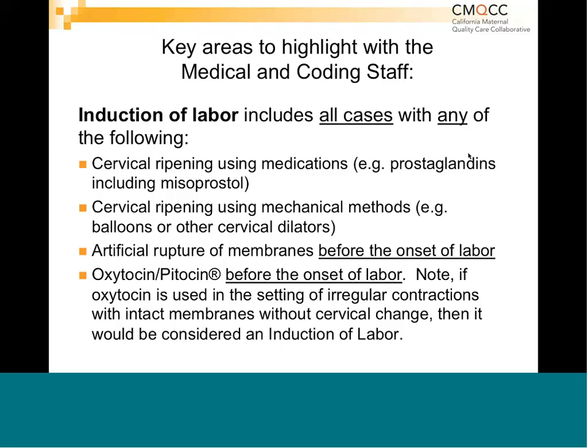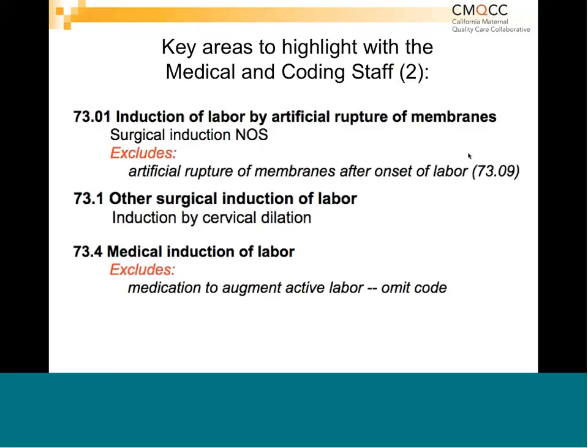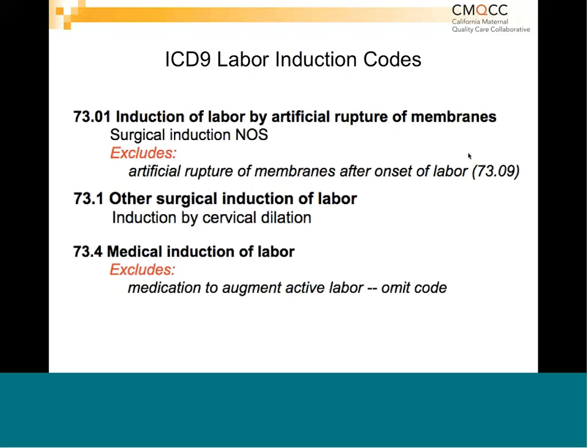We have a few more coming in, but I'm going to let you keep going and we'll stop there a little bit after that. Again, the key area to highlight with our medical staff is that augmentation of labor only occurs after the onset of spontaneous labor — defined as contractions with cervical change — or after spontaneous ruptured membranes with contractions. Here you don't have to have cervical change, because you're not going to be doing a lot of exams at this point. And if you're ruptured and contracting, you're going to be in labor. But again, if you're ruptured and have absolutely no contractions, then it would be induction. This is a tricky area for documentation and it really needs to be spread onto the labor units.